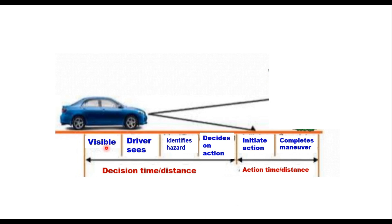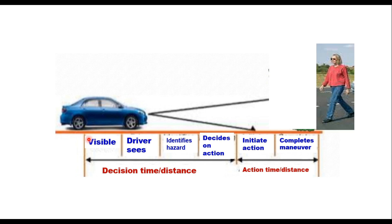To explain it again: a driver sees an object — such as a pedestrian — on the road; the driver identifies the hazard, takes a decision for action, initiates action, and completes the maneuver. The decision time is the perception reaction time, and the action time follows. The driver must be able to stop the vehicle before colliding with the pedestrian, bicyclist, or any other hazard on the road.